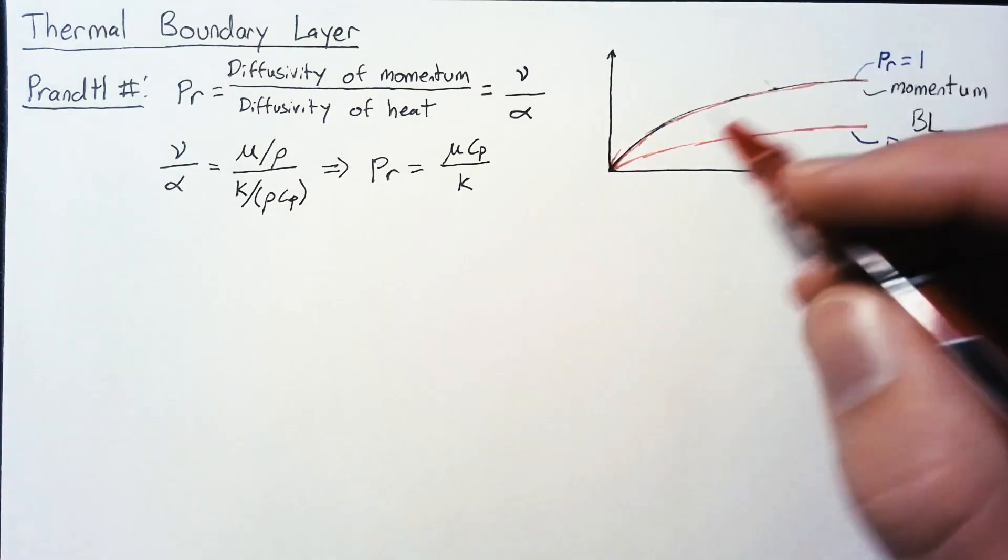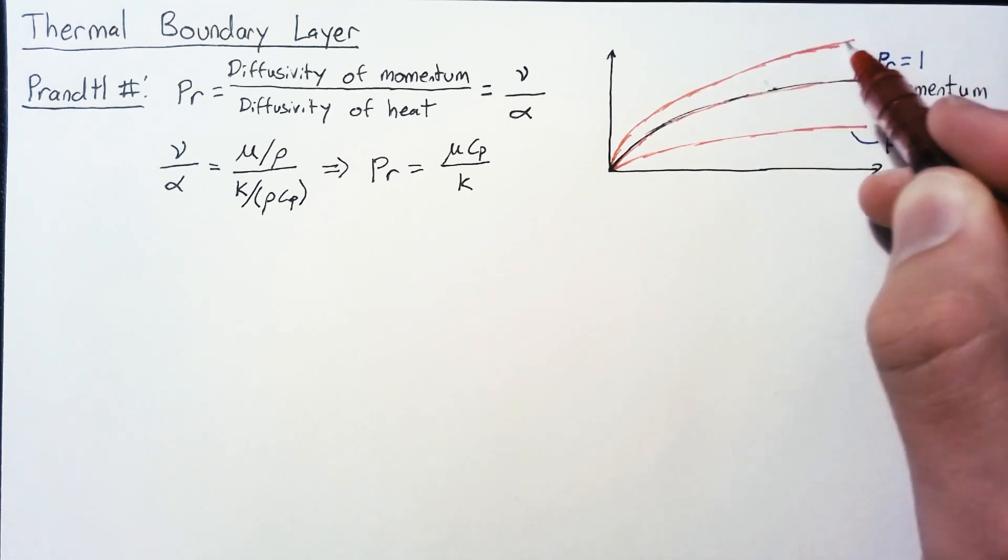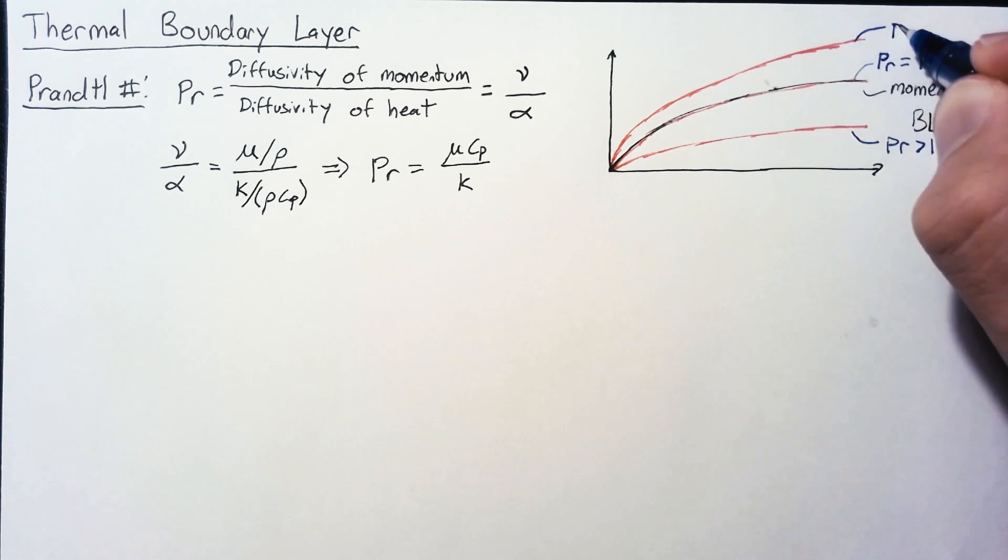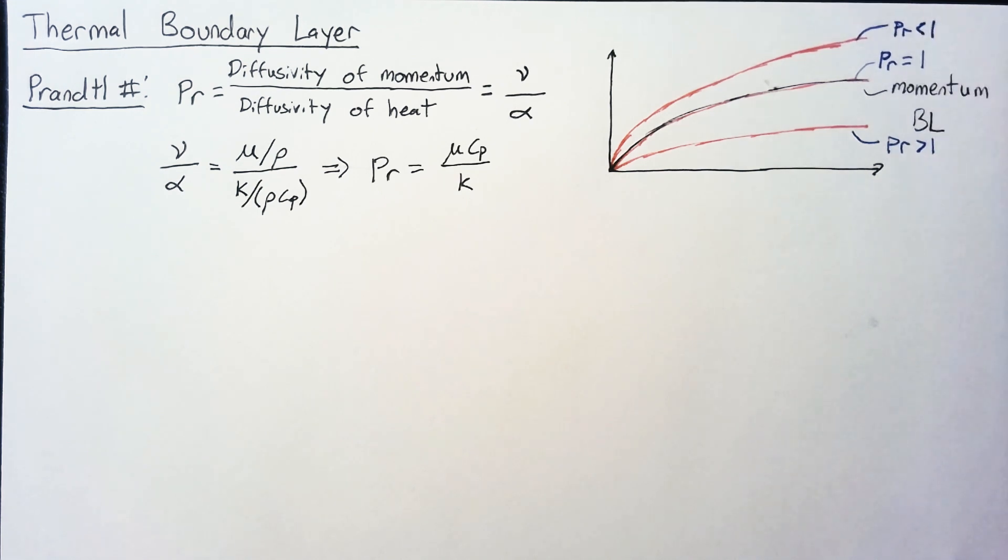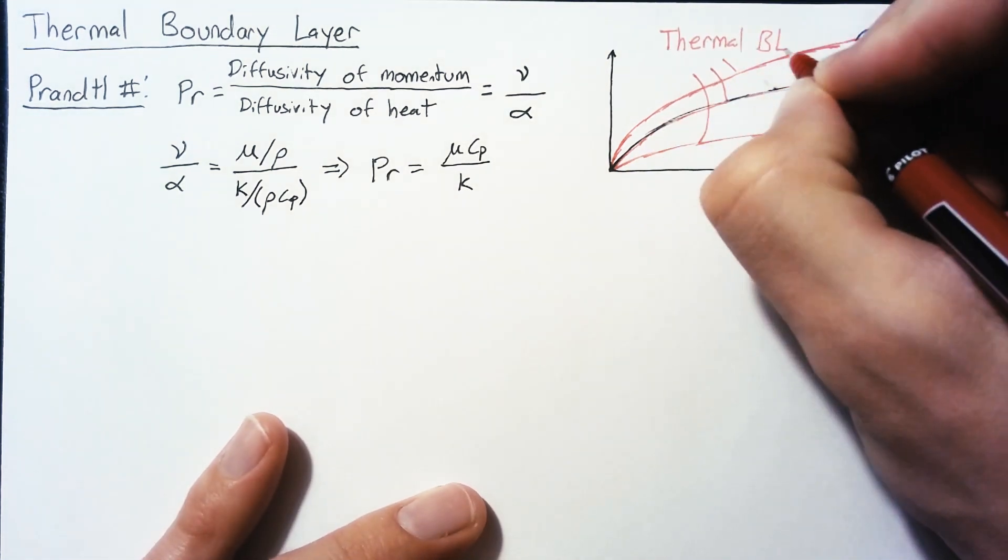If the Prandtl number is smaller, the exact opposite will happen. Heat will leak out faster from the wall, meaning that it will affect more of the flow further away from the wall. When the Prandtl number is smaller, the thermal boundary layer will be larger. So all three of these red lines are different thermal boundary layers.